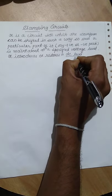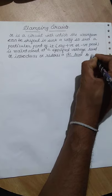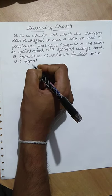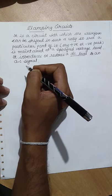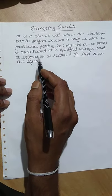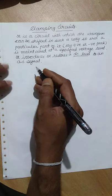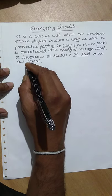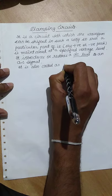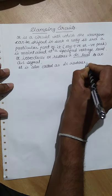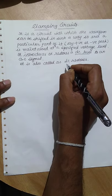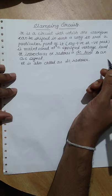The clamping circuit introduces or restores a DC level to an AC signal. This point is important to remember: a DC level is added to the AC signal input. Because it restores the DC voltage level of an AC signal, the clamping circuit is also called a DC restorer.